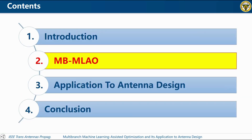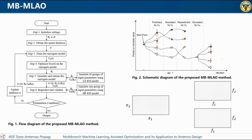To solve this problem, a multi-branch machine learning assisted optimization, or MBMLAO, is proposed. Figure one is the flow diagram of the proposed MBMLAO method. We will discuss the algorithm in detail.